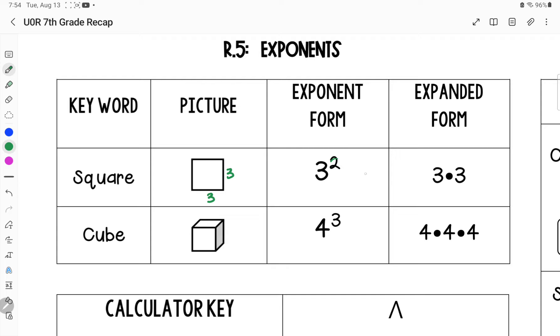Exponent form is going to have your exponent or your power, and expanded form is where you write it out. Standard form would be your final number, like just a number. In this case, this is expanded because I'm taking it and making it bigger.